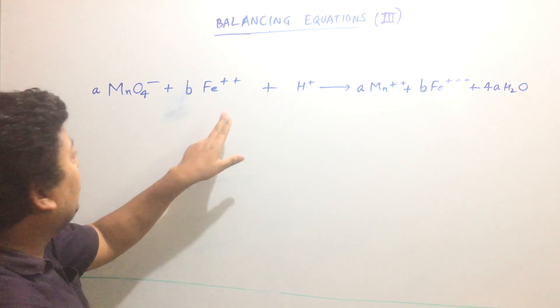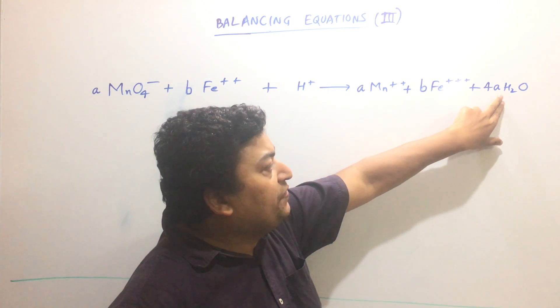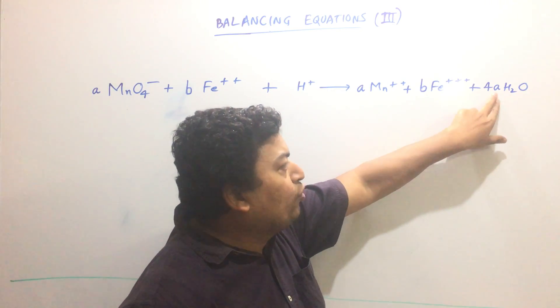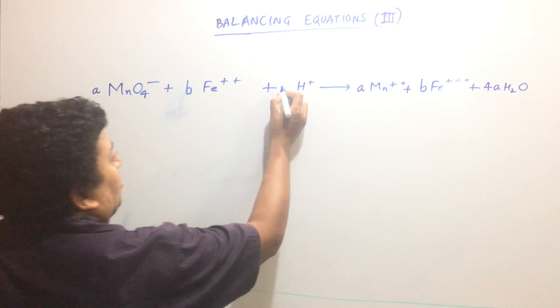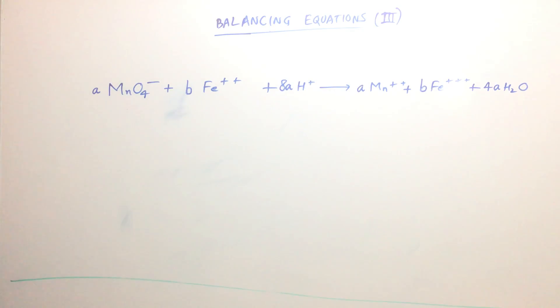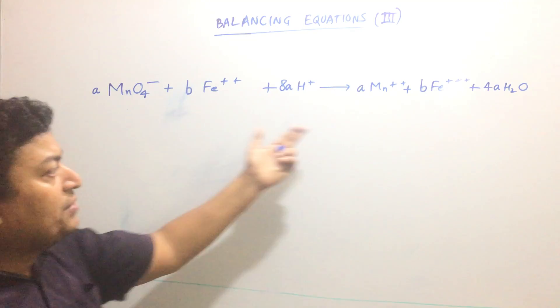Now hydrogen appears here and here. This side we have 8A (4 times 2) hydrogen atoms. So we must make sure that 8A hydrogen appears here. Now we have written the numbers everywhere.